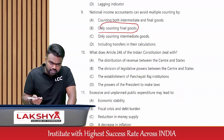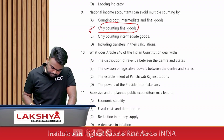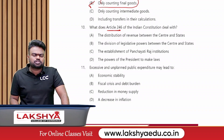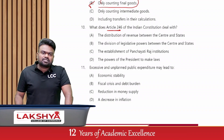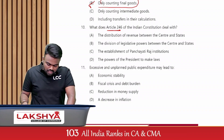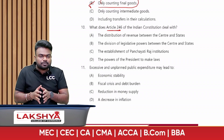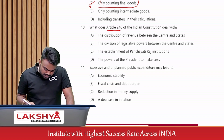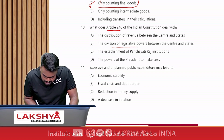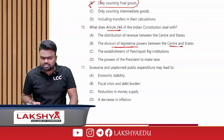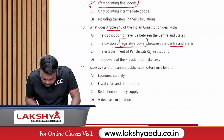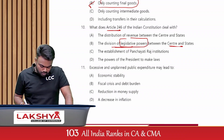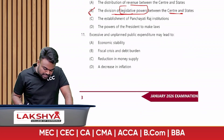What does Article 246 of the Indian Constitution deal with? Article 246 distributes power between the central government and the state government — that is, the division of legislative power between the center and state. Legislative power means the power to prepare the law. The correct answer is option B.